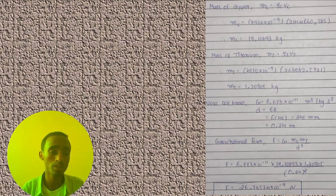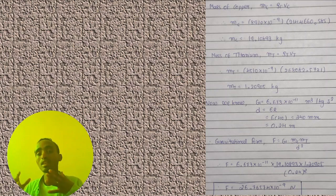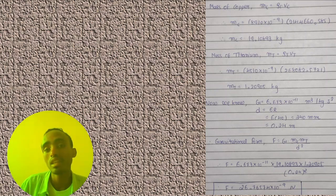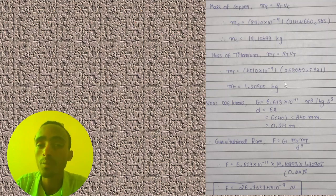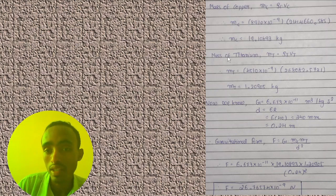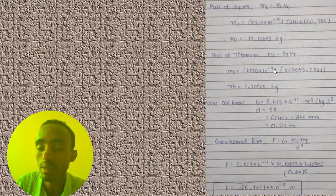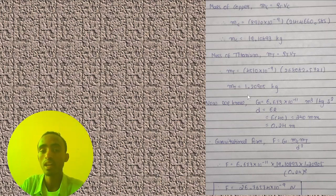From the relation density = mass/volume, we can calculate the mass if we are given the density and volume. The mass of the copper sphere equals the density of copper times the volume of copper. The mass of the titanium sphere equals the density of titanium — 4,500 kg/m³ — times the volume of the titanium sphere, and substituting the values gives us the final mass.